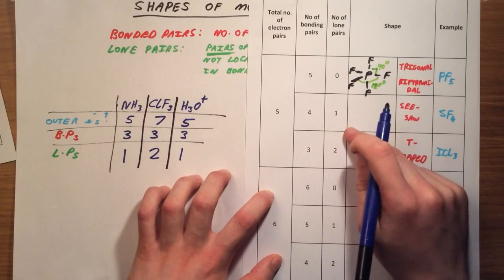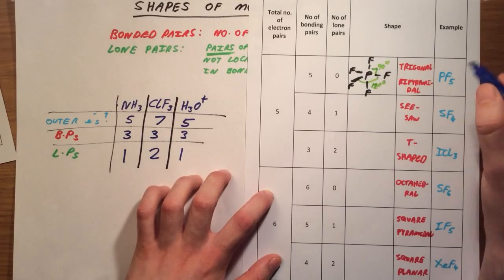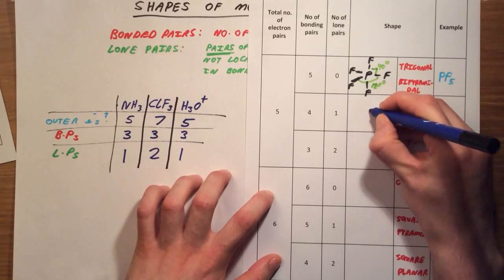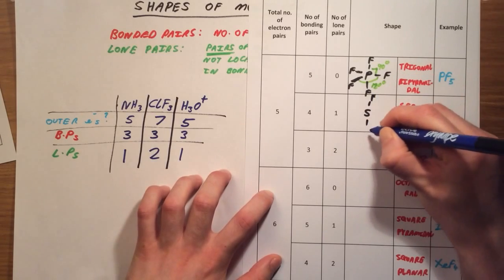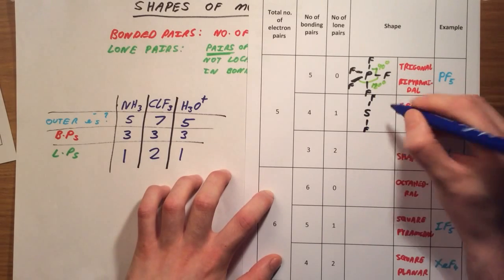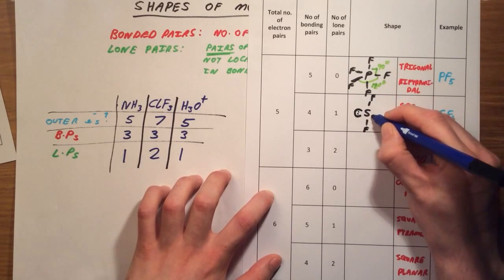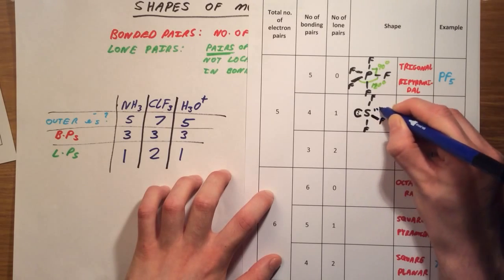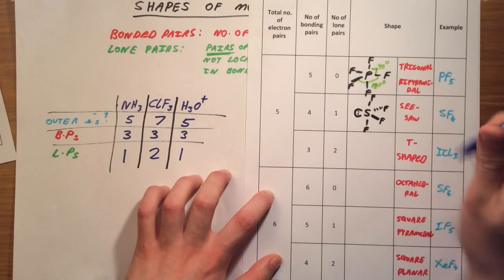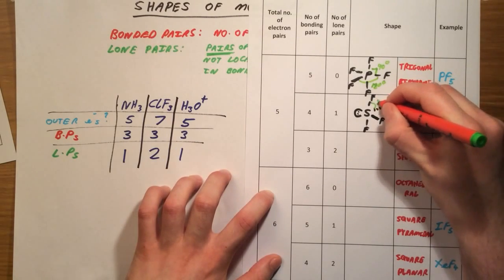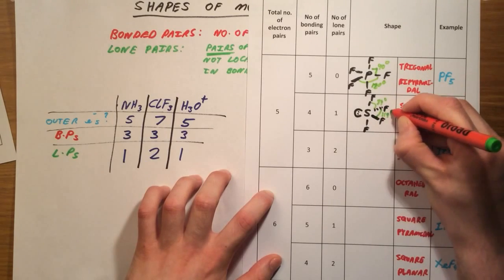With 4 bonded pairs and 1 lone pair, we get a seesaw shape. We have a central sulfur with fluorine atoms at the top and bottom, and one fluorine coming towards us and one going away, plus a lone pair about the sulfur. This lone pair reduces the bond angles slightly, giving about 89 degrees between the top fluorines and the central ones, and about 119 degrees between the equatorial fluorines.